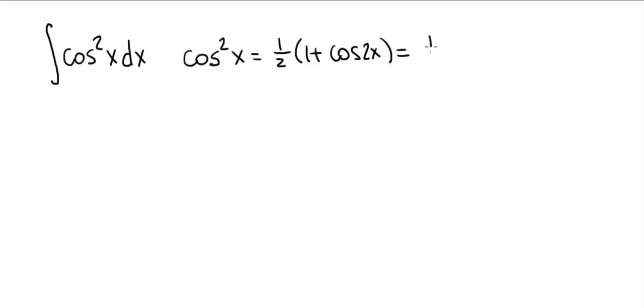Or we can expand this. This is 1 half plus 1 half times cosine of 2x. Second, we're going to need the following trigonometric identity: sine of 2x is equal to 2 times sine x times cosine x.